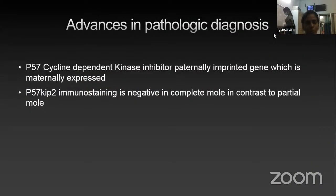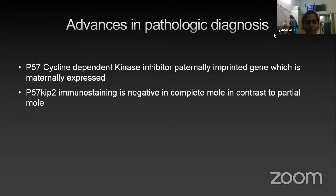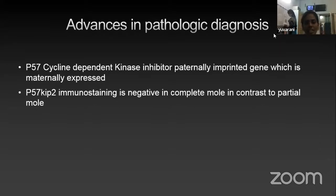Regarding advances in pathological diagnosis: P57, a cyclin-dependent kinase inhibitor, is a paternally imprinted gene which is maternally expressed. P57 KIP2 immunostaining is negative in complete mole in contrast to partial mole.